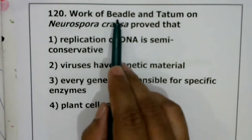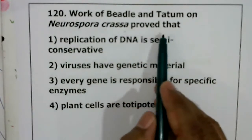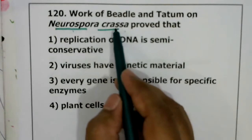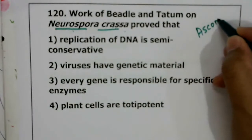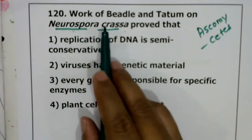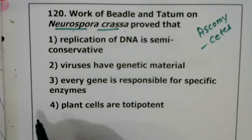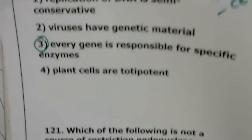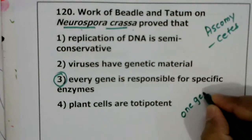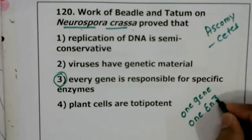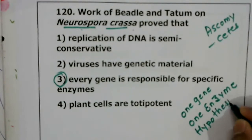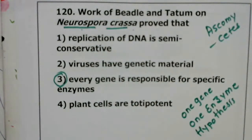Question 120: work of Beadle and Tatum on Neurospora crassa. Neurospora crassa is a fungi belonging to Ascomycetes. They conducted experiments on this fungi and concluded that every gene is responsible for a specific enzyme. This theory is also called the one gene one enzyme hypothesis, proposed by Beadle and Tatum, who received the Nobel Prize for this. Correct answer is the third option.